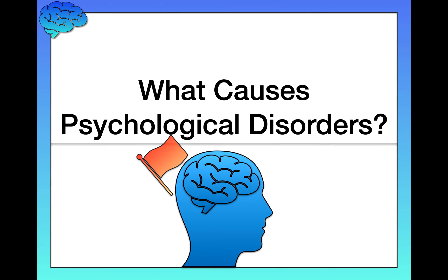In this video we'll continue our discussion of psychological disorders by talking about the etiology, or causes, of psychological disorders. In future videos we'll talk about the causes or etiology of specific types of psychological disorders, like anxiety disorders or mood disorders. In this video, however, we're really going to focus on general explanations that apply broadly to many types of psychological disorders.